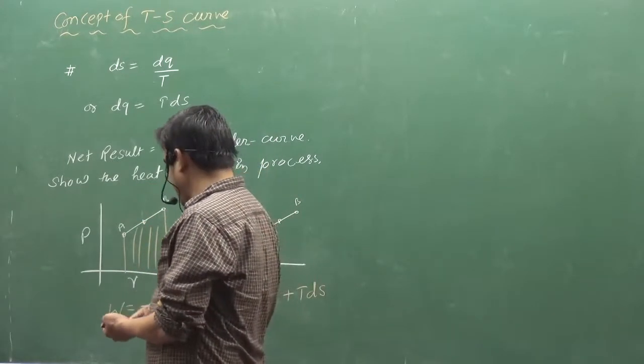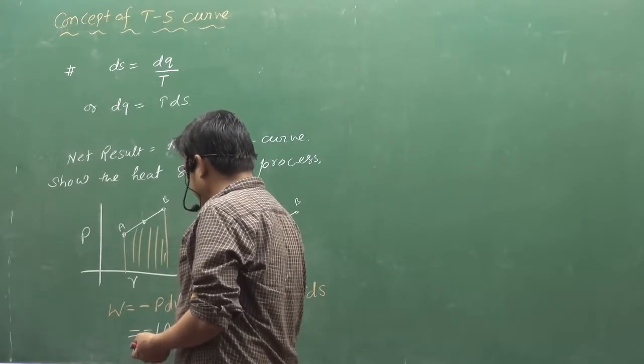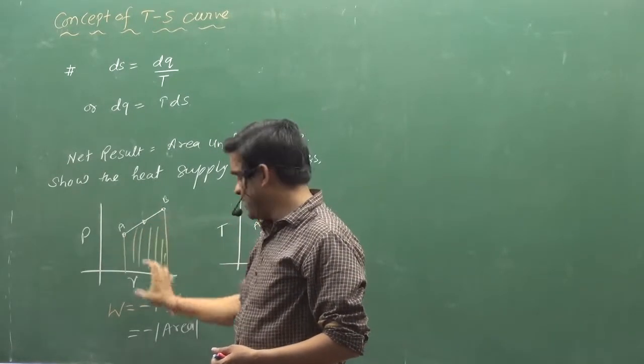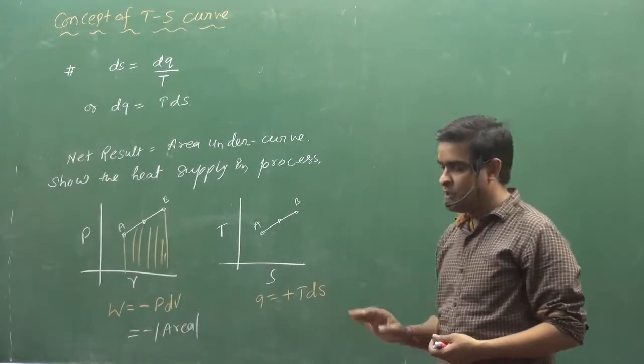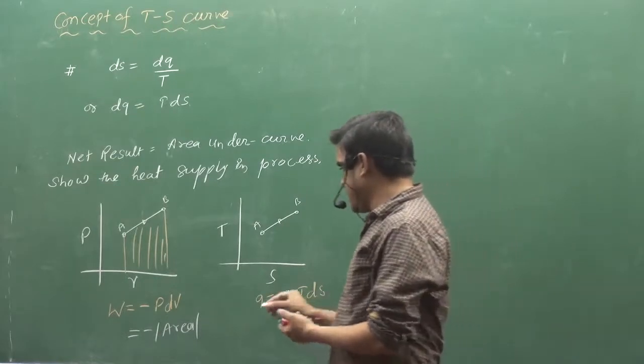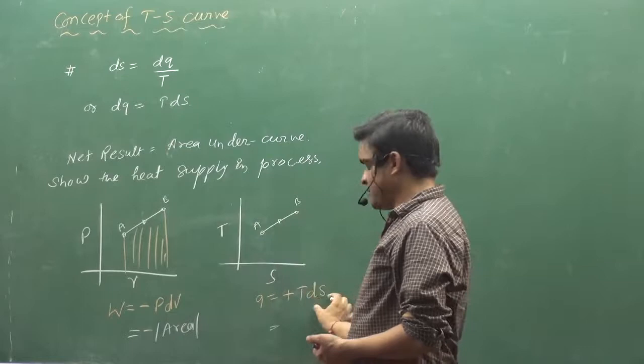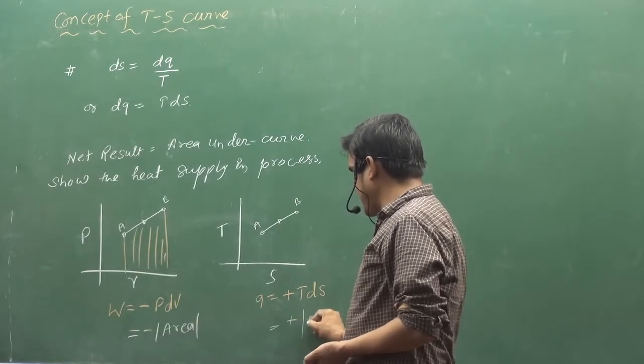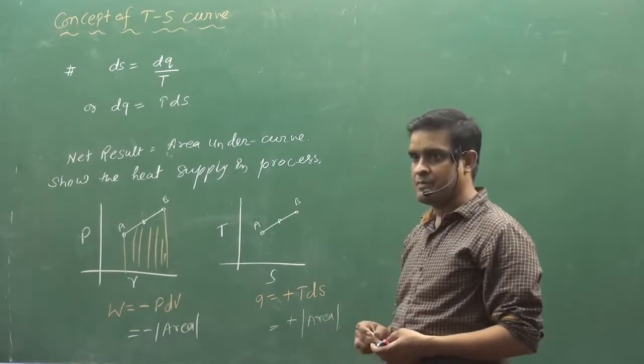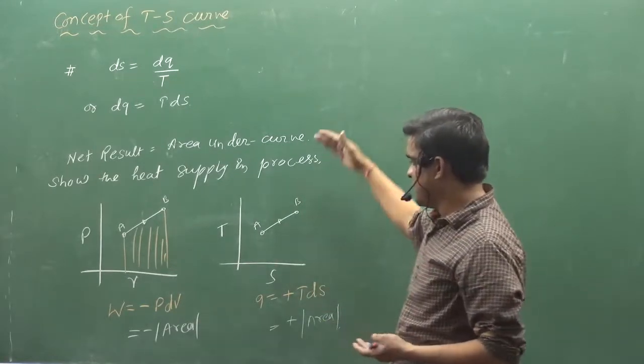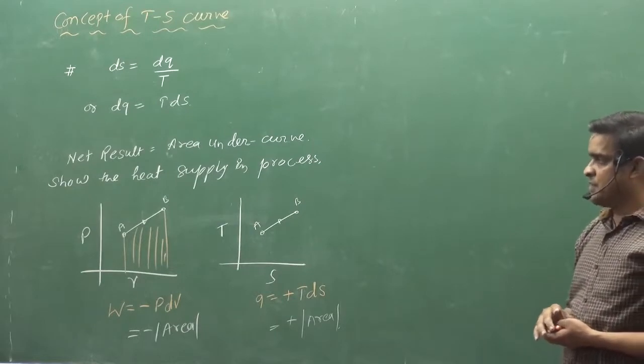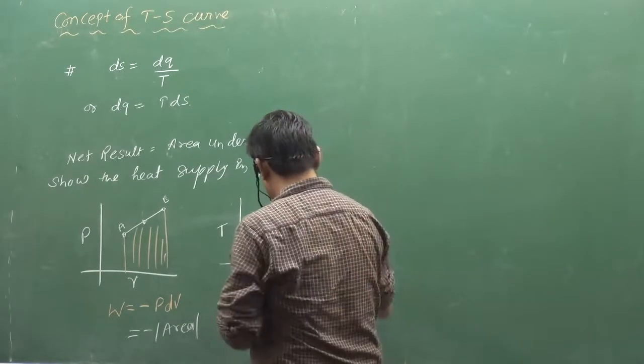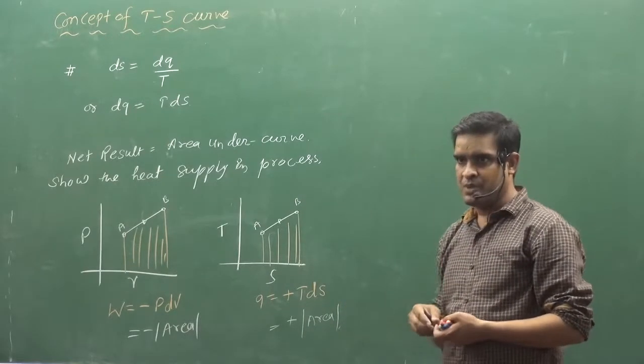What will happen here? Minus area. Because DV here is positive. So whatever area will happen, what will happen here? Minus. Volume is increasing. Negative. But here delta S, what is the value? Positive. T is always positive. Delta S positive. So this will be more. However, there is no problem with sign.